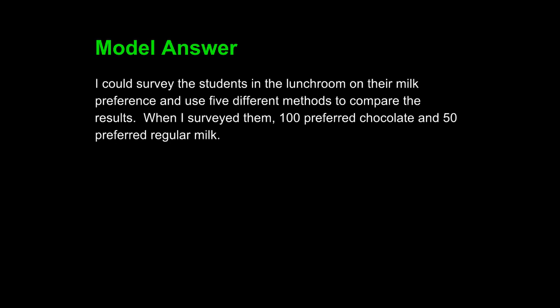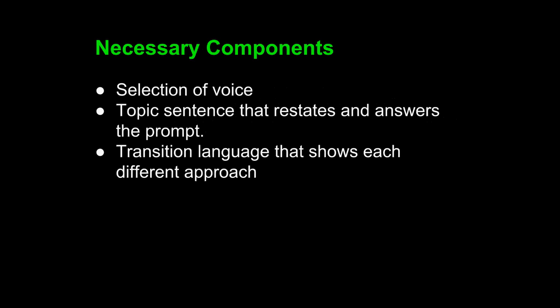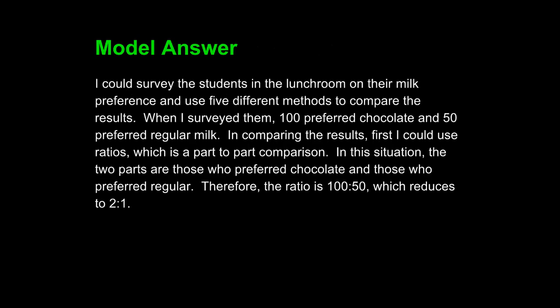Remember, when writing a topic sentence, always restate and answer the prompt. The next necessary component of a paragraph like this is transition language that shows each different approach. So, here are some subsequent sentences after my first two: In comparing the results, first I could use ratios, which is a part-to-part comparison. In this situation, the two parts are those who preferred chocolate and those who preferred regular. Therefore, the ratio is 100 to 50, which reduces to 2 to 1. These are my transition words: first and therefore. The first transition word, the word 'first,' indicates that this is the first of five methods that I will discuss. The word 'therefore' is a transition that shows reasoning, and it shows that my results can be reduced or can lead to a conclusion of 100 to 50. That shows reasoning. I've used two different transitions to show different thought.